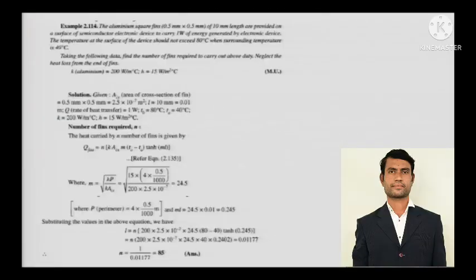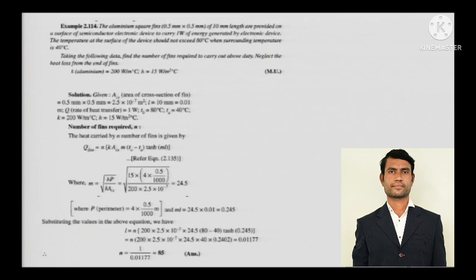Aluminum square fins of 10 mm length are provided on the surface of a semiconductor electronic device to carry one watt — Q is given. The energy generated by the electronic device is given. The surface temperature T₀ is 80 degrees Celsius and the surrounding temperature T_A is 40 degrees Celsius.